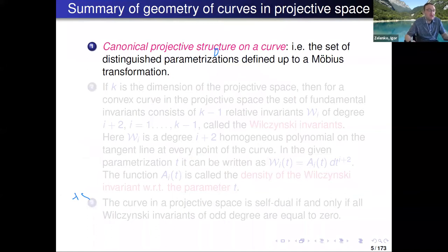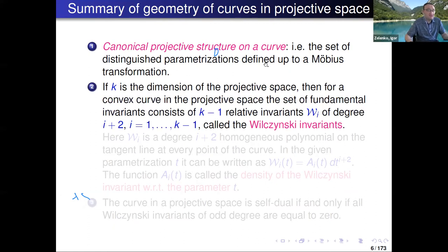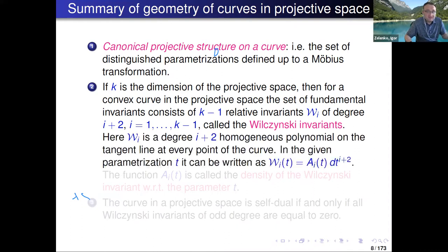Therefore we can reduce ourselves to the geometry of curves in projective space. First, we have a canonical projective structure on the curve: curves are not parameterized in general, but we can find a set of distinguished parameterizations defined up to Möbius transformations. If k is the dimension of the projective space, we can construct special invariants — or relative invariants — of a curve in projective space, called Wilczynski invariants. There are k minus one of them, and each W_i has degree i plus two.